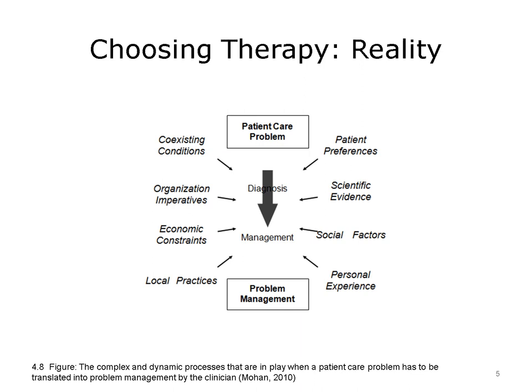First among these are coexisting conditions, current or past illnesses, and medications that have an impact on treatment decisions for a new problem. For example, a patient with kidney disease may not be able to metabolize certain medications. In a patient with diabetes, it may be desirable to treat high blood pressure in a different way than in other patients.